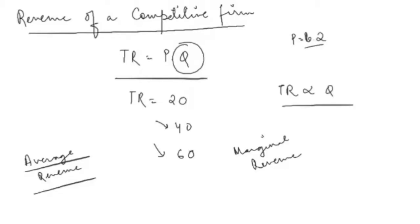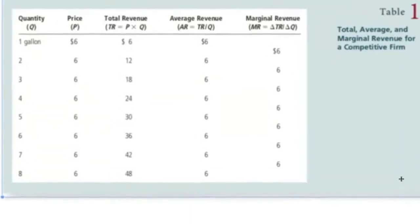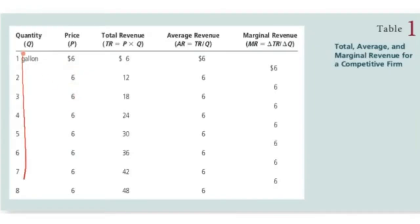Average revenue will tell you on average what amount of revenue the competitive firm is earning. Let's look at the revenue table — the first column is quantity, second is price, third is total revenue, fourth is average revenue, and fifth is marginal revenue. The prices here are constant because competitive firms are price takers — they do not decide the prices. Price is constant at six dollars and you can change the quantity sold.